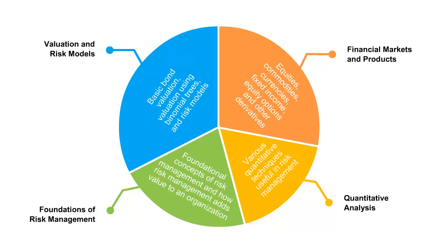There are four broad areas tested in the FRM Part One exam. The first is Foundations of Risk Management, which focuses on foundational concepts of risk management and how risk management can add value to an organization. The second is Quantitative Analysis, which tests basic probability, statistics, regression, and time series analysis. The third is Financial Markets and Products, testing knowledge of financial products and the markets in which they trade. The fourth is Valuation and Risk Models, testing valuation techniques and risk models.